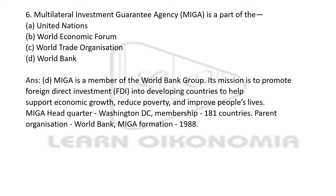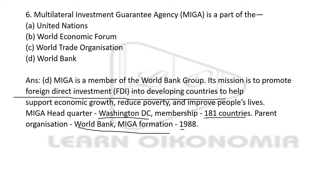The Multilateral Investment Guarantee Agency, known as MIGA, is part of which body? Options are UN, World Economic Forum, WTO, or World Bank. The right answer is option D — MIGA is a part of the World Bank. The motive of MIGA is to promote foreign direct investment to developing economies in order to support economic growth, reduce poverty, and improve people's lives. The headquarter of MIGA is in Washington D.C., and it has 181 member countries. Its parent organization is the World Bank, and it was formed in 1988.